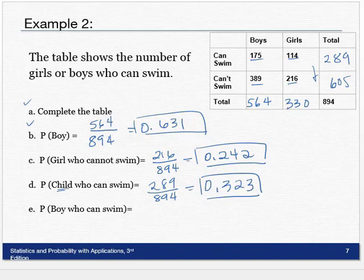Lastly, part E: A boy who can swim. So a boy who can swim is 175 out of 564. And as a decimal, that's 0.193.